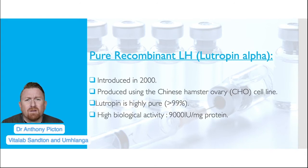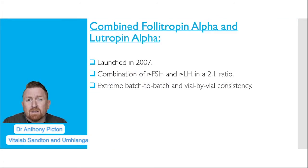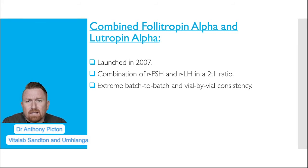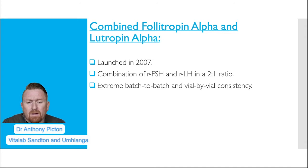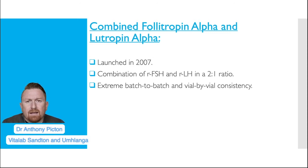The last recombinant product to enter the market was a combination of folytropin alpha and lutropin alpha, launched in 2007. The ratio of FSH to LH is 2-to-1, as opposed to HMG which is a 1-to-1 ratio. Again, because of the production process, there is great consistency from batch to batch and also from vial to vial.